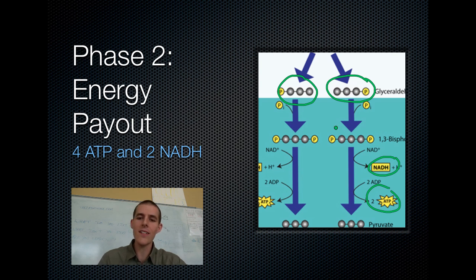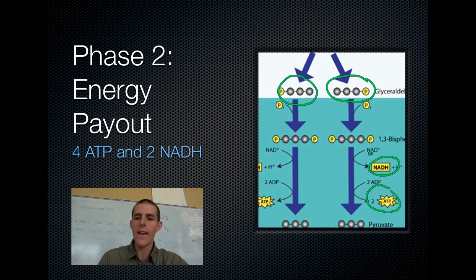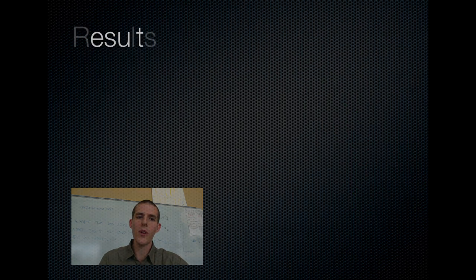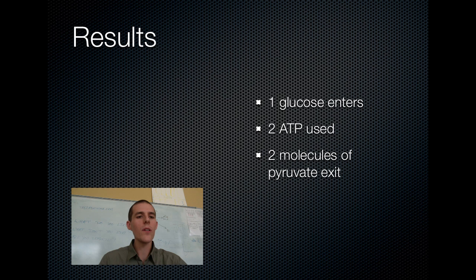The way that happens is as this molecule is going through its various transition states, one of those states is a molecule that has an electron to give up. When it gives up its electron, NAD+ picks up that electron and also attaches a hydrogen. It takes that high energy electron and hydrogen over to the electron transport chain, which we will talk about later in cellular respiration. It's always good to talk about the results when discussing glycolysis.